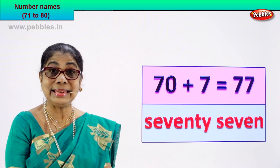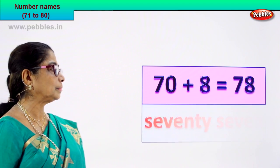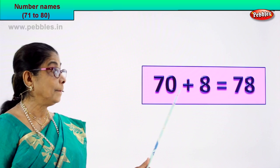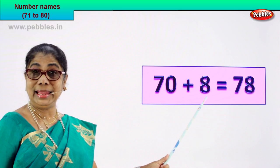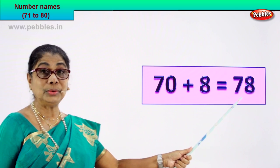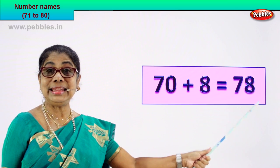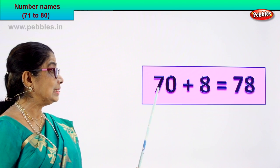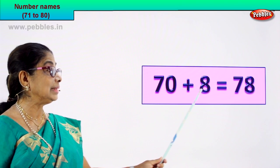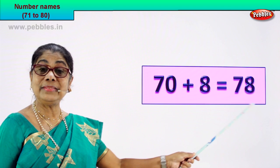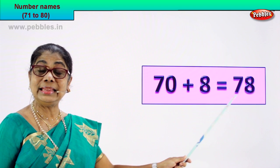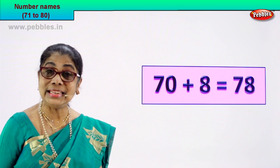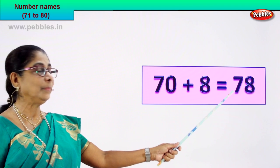Let's take the next number. 70 plus 8 is equal to 78. 70 plus 8 is equal to 78. 7 and 8 — 78. That's the numeral.